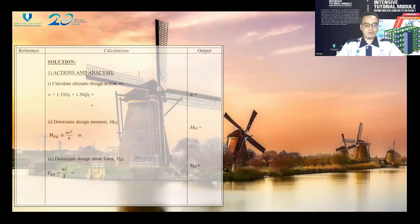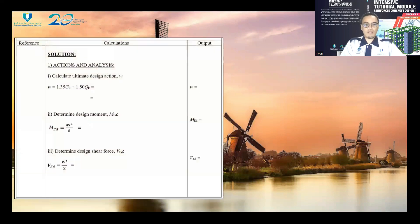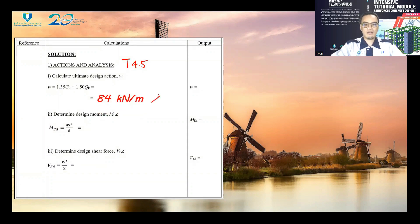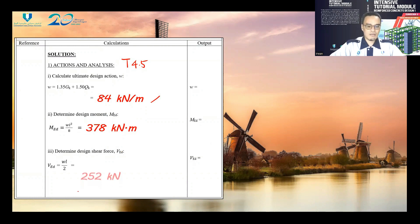Here are the solutions. First of all, we calculate the actions and the analysis of the beam. You can refer to tutorial 4.5 for this part. The ultimate design action is equal to 84 kilo-Newton per meter, the design bending moment is equal to 378 kilo-Newton meter, and the design shear force is equal to 252 kilo-Newton.